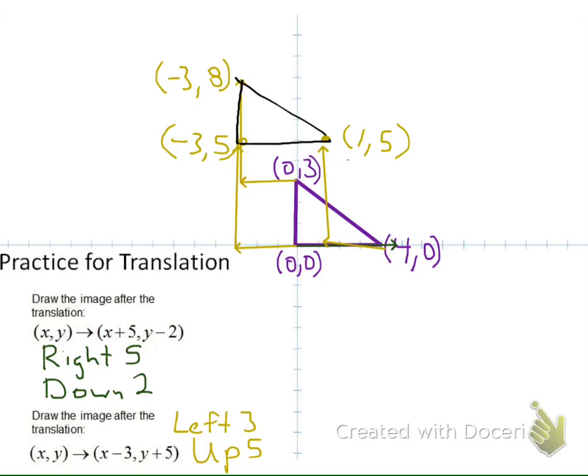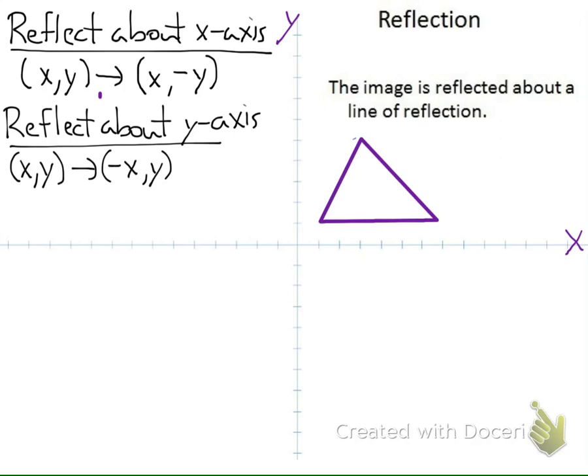So that is a translation. Next we're going to go to a reflection. In a reflection we have two different types: we could reflect about the x-axis, and we could reflect about the y-axis. First let's look at the x-axis — we're going to reflect in this direction. Before we get to the notation, let's think about copying this object over. If I think about reflecting the points first, I can reflect those points and then connect the lines afterwards.